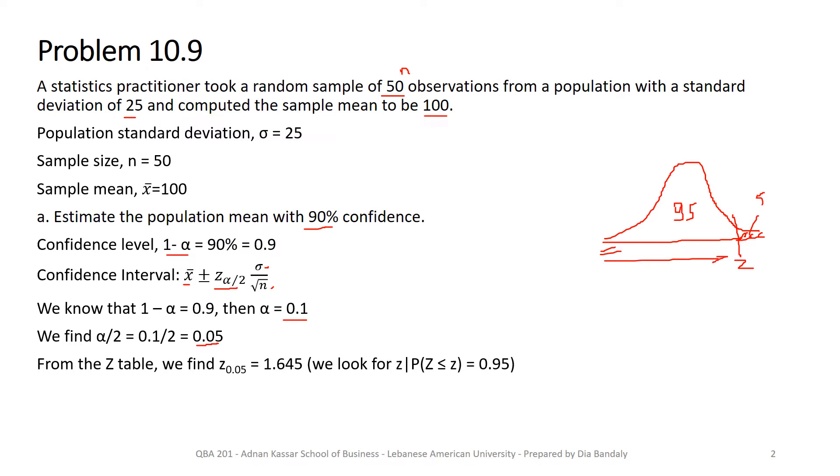So here we go. We look for the z such that P of z less than or equal to z is 0.95. And this is 1.645. So now we have all the elements to find the confidence interval. And here we go.